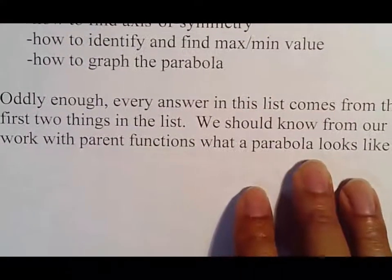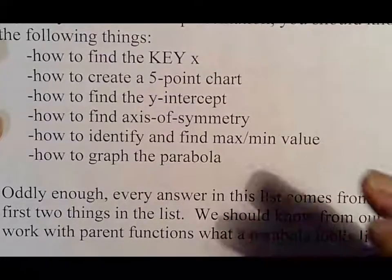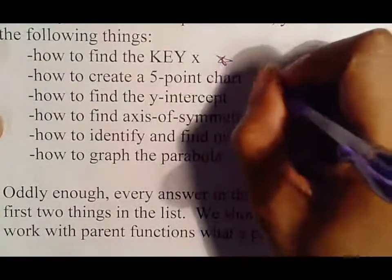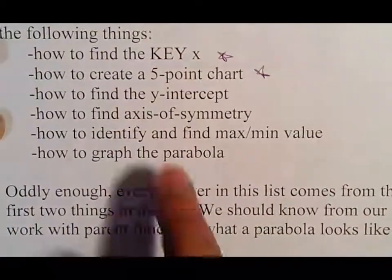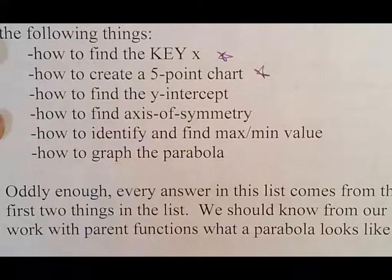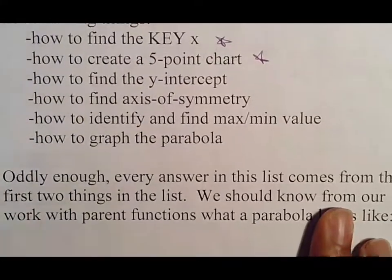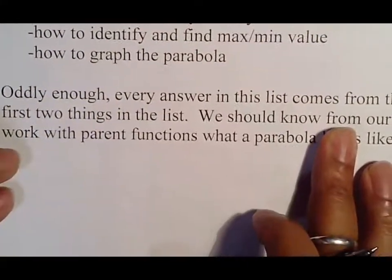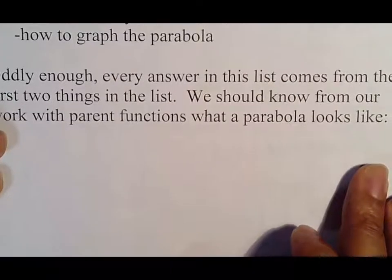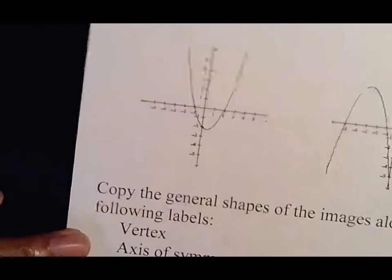Every question in this list comes from the first two things on the list, so the key X and the five-point chart are the two things. Make sure you write these things down, because whatever you don't know, you want to come back and re-watch, or email me and say you know how to do most things but need help with, say, the axis of symmetry or whatever it is. Everything comes from that part, so we should know from our work with parent functions what a parabola looks like.